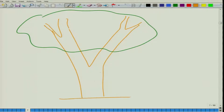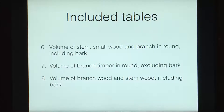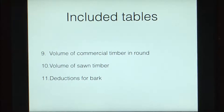You can find out the volume of the main stem, the branches, or even smaller branches. Tables can cover volume of stem small wood and branch in round including bark, or volume of branch timber in round excluding bark — useful for fuel wood applications. Depending on your applications, you can have different kinds of tables: volume of branch wood and stem wood including bark for fuel value, volume of commercial timber in round, volume of sawn timber, or even a table for bark deductions.